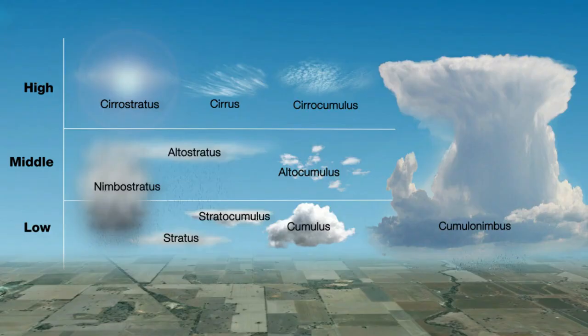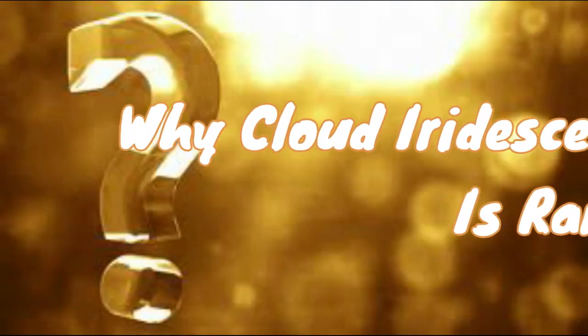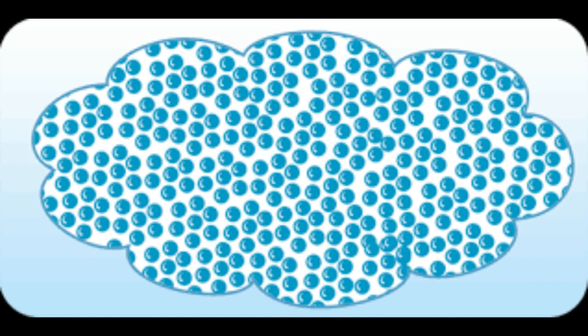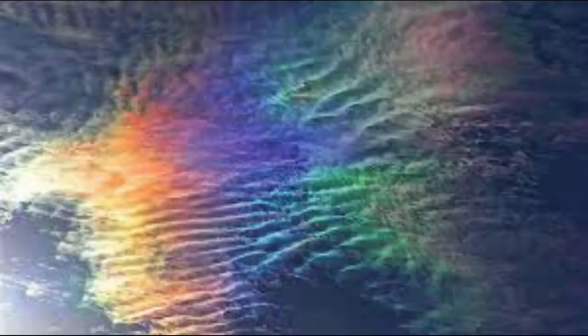The types of clouds that iridescence occurs in are ones that are high up in the atmosphere. Moreover, the closer the sun is to the cloud, the stronger the iridescent colors. What makes it a real phenomenon is that it happens when a cloud is filled with micro water droplets. When sunlight passes through the cloud, it encounters those micro water droplets, then diffracts, giving us as a result this fascinating phenomenon — cloud iridescence.